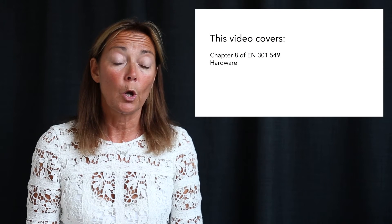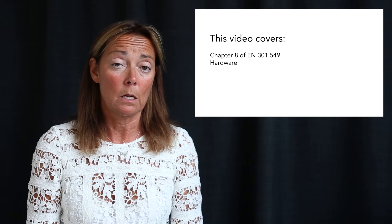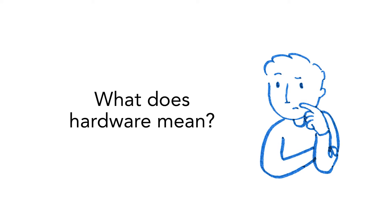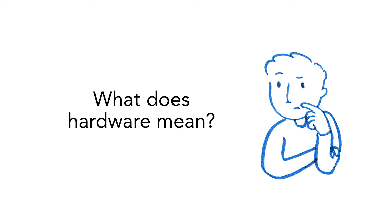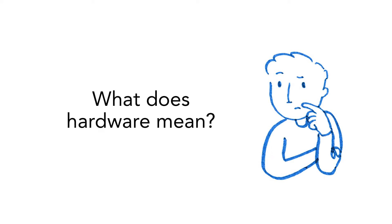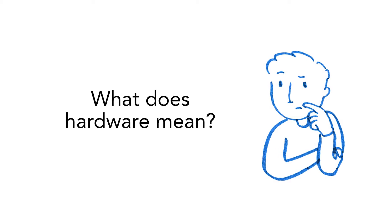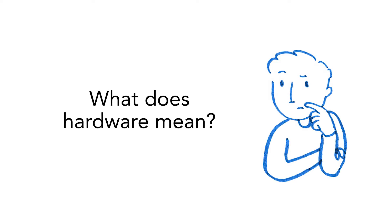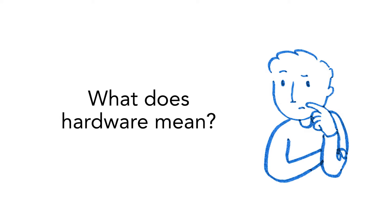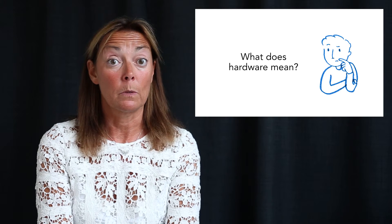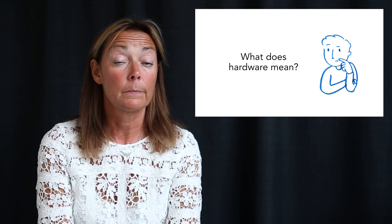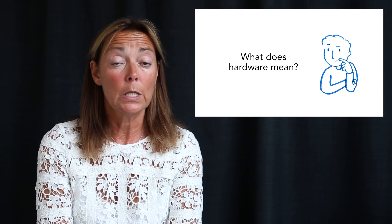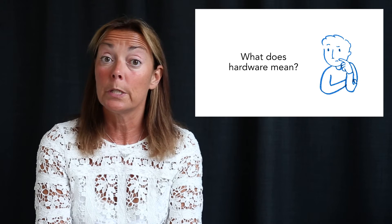In this video, we are going to take a closer look at chapter 8 of the EN standard, which covers hardware. In the EN standard, this chapter covers both the hardware as such — the buttons and switches — but also how the user gets close enough to the hardware to actually use it. It is a long chapter with many technical details. We will go through each of the subsections here, but you need to read the standard carefully to get hold of all the details and measurements.